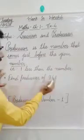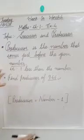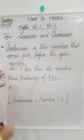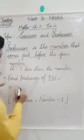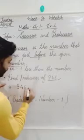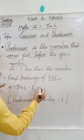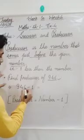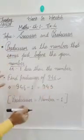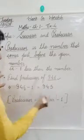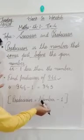Suppose that we have the number 946 and we have to find the predecessor. To find the predecessor, we will subtract 1 from its ones place digit. So 6 minus 1 is 5, and we write the remaining number as same. The predecessor of 946 is 945. So predecessor is equal to number minus 1.